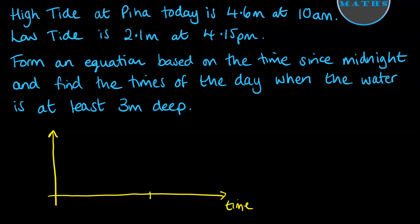So if we plot 10 to be around here, that's 10 hours after midnight, and 4:15 p.m. would be 16 and a half hours after midnight, so 16.5 there. And our top would happen at the 10 mark and the bottom would happen at the 16.5, and they would be 4.6 and 2.1.